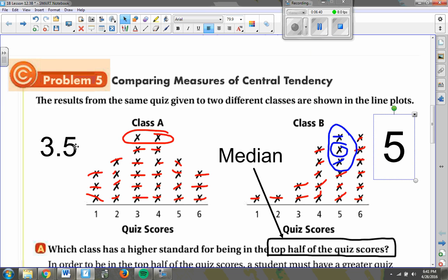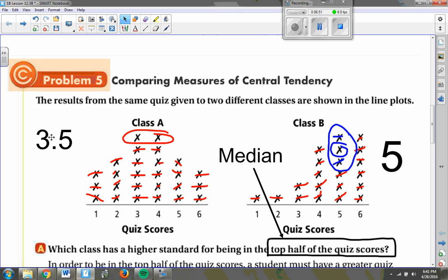And my median over here is 3.5. So class B, in order to be in the top half, we would have to be at a score of five. But in class A, we'd only have to be at a score of 3.5 to be in the top half of the quiz scores.